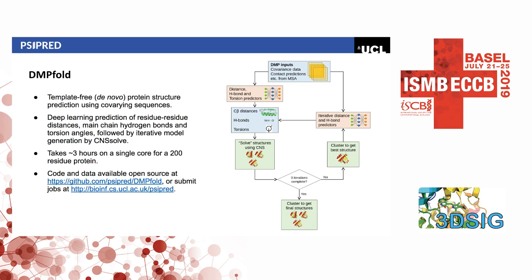DMPfold is template-free, also known as de novo protein structure prediction, using covarying sequences. We use deep learning to predict residue-residue distances, main chain hydrogen bonds, and torsion angles. We generate structures with CNS and then use an iterative procedure to refine models. We've focused on making this method as fast as possible — it takes about three hours on a single core for a 200-residue protein, and that includes feature generation, which is often omitted in these times. The code and data are fully available open source, and as of last week you can now submit structures to our web server.